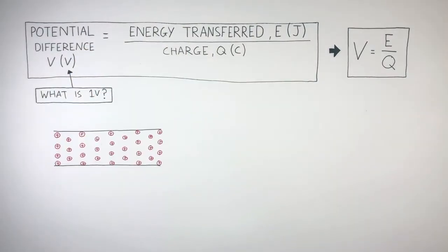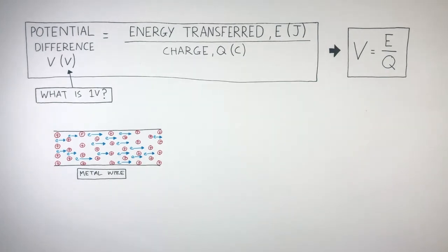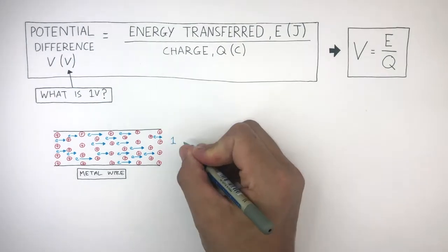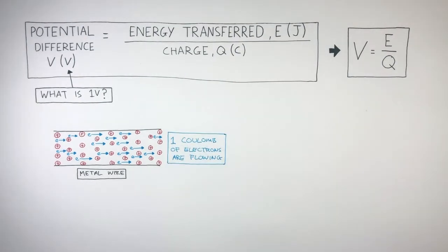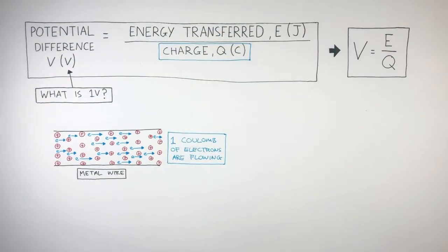Here's a close-up of a metal wire. The red circles with crosses represent positive metal cations. These blue E's with arrows represent the electric current, which is the flow of charge per second. This diagram represents how 1 coulomb of electrons are flowing, which is the charge in the equation.